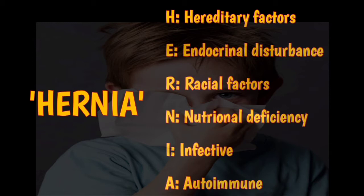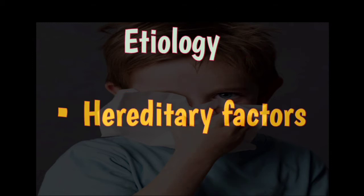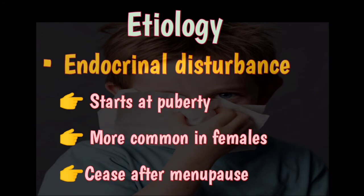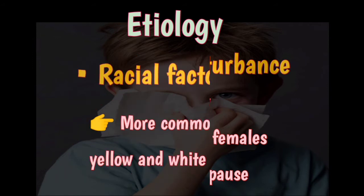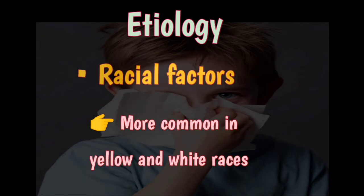Hereditary factors are involved in the causation of atrophic rhinitis, as the disease is known to involve more than one member in the same family. Endocrine disturbances also play a role, as the disease starts at puberty, it is more common in females, and it ceases after menopause.